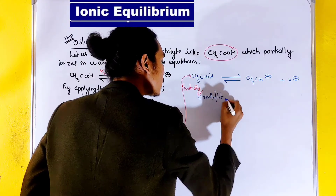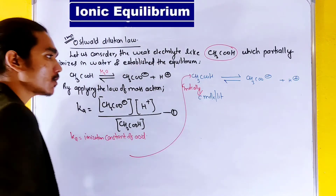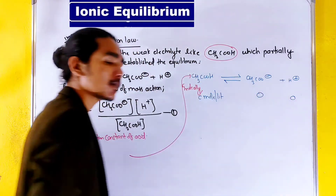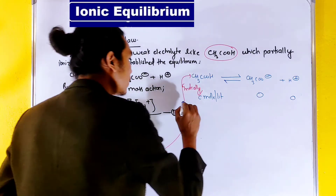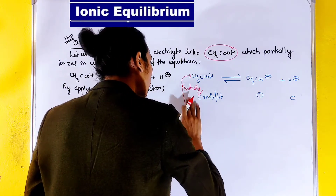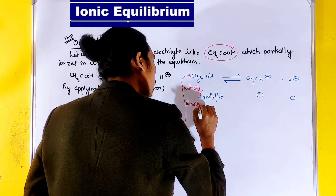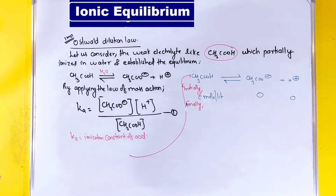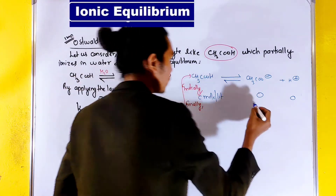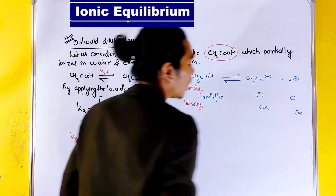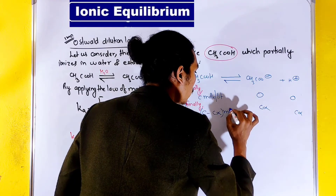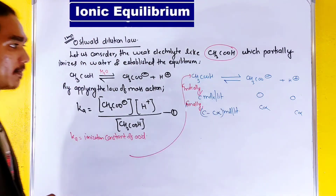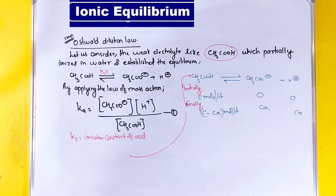Initially, the concentration is C mole per liter. After a certain time, when equilibrium is reached, we have C-alpha formation — that is, C minus C-alpha mole per liter.